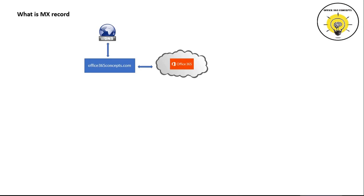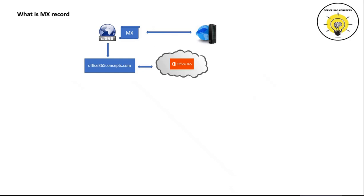When we add a domain in Office 365, we publish a few DNS records within our public DNS — for example, TXT, MX, and CNAME records. It depends on our business requirement where we need our MX record to be pointed. That means we can point the MX record either to Office 365 or we can point it to a different email server.